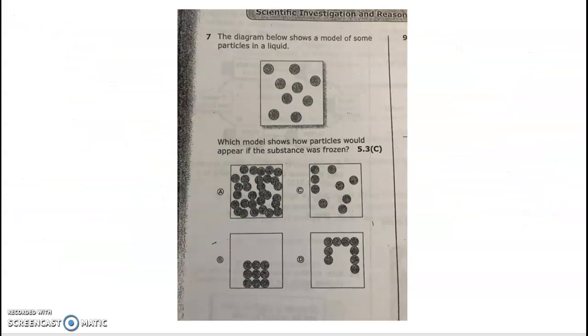Next one, number seven. The diagram below shows a model of some particles in a liquid. Which model shows how the particles would appear if it was frozen? If I freeze it, that's going from a liquid to a solid. I know solids particles are packed tight. So in this case I see one, two, three, four, five, six, seven, eight, nine. I have nine. It's not going to suddenly multiply—that'd be weird.